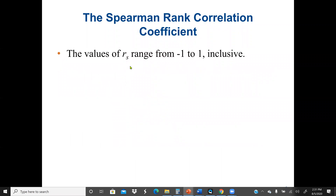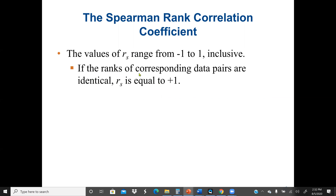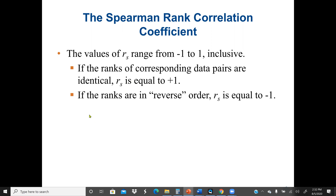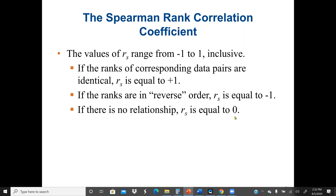The value of R-sub-s ranges from negative 1 to positive 1, the same concept as the Pearson correlation. Negative 1 means there is a decreasing relationship. If the ranks of corresponding data entries are identical, then R-sub-s equals positive 1. If the ranks are in reverse order, then R-sub-s equals negative 1. If there is no relationship, then R-sub-s equals 0.